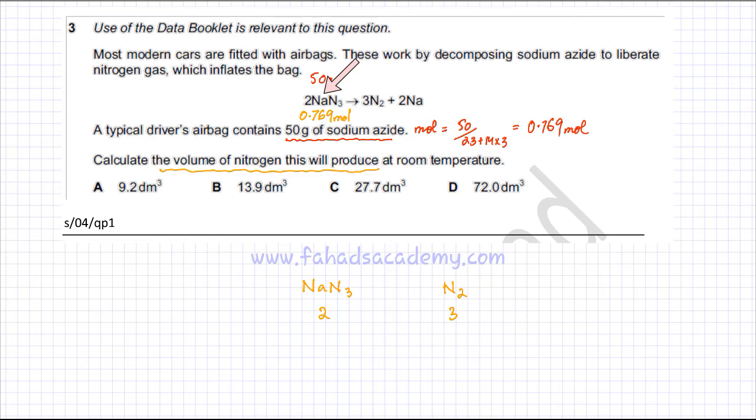You can look at the equation. 2 NaN3 are producing 3 nitrogen molecules. I'm going to use this ratio and find out. If I have 0.769 moles of NaN3, how many moles of nitrogen would be produced? And that would be equal to, it's going to be equal to 0.769,